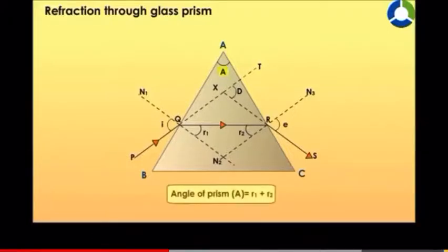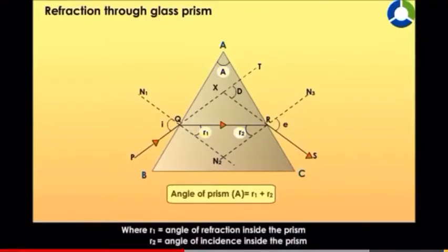Angle of prism A equals R1 plus R2, where R1 equals the angle of refraction inside the prism, and R2